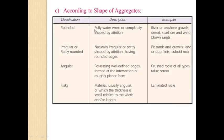Next is classification according to the shape of aggregate. Aggregates are classified as rounded, irregular (partially rounded), angular, and flaky aggregate. Shape is an important characteristic since it affects the workability and strength of concrete. Not only the parent rock but also the type of crusher used influences the shape. Shape of aggregate is more important for coarse aggregate than fine aggregate.